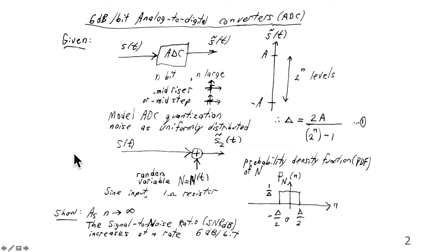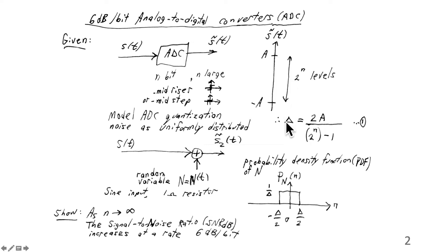The signal is going into an ADC and it's being limited in amplitude level, S̃(T), between minus A and A. The sine input applied to a 1 ohm resistor has amplitudes between plus A and minus A. With an n-bit A-to-D converter, there are 2^n levels, and so the difference between levels would be 2A divided by (2^n − 1). If there are 2^n levels, then there are 2^n − 1 ranges — the widths of each of the quantization intervals — and that's equation 1.